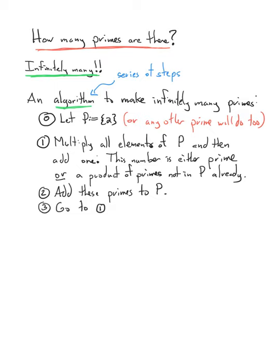So we'll start with a set P, and I'm just going to put one prime number in it. And I'll pick two. Really, you could do this with any prime number you like, but let's take the smallest prime just to make our life easy.